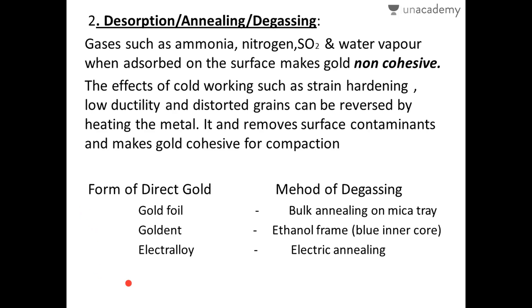Based on the form of direct gold, the annealing methods differ. For gold foil, we anneal by bulk annealing on a mica tray. For goldent, we anneal using the blue inner core of the ethanol flame. For electrolyte, it is degassed by electric annealing. These are all synonyms: desorption annealing and degassing.